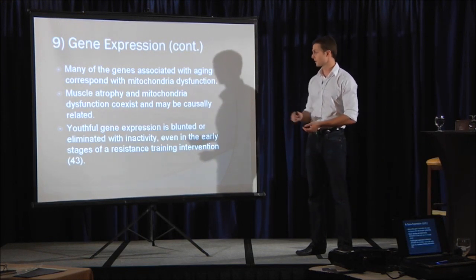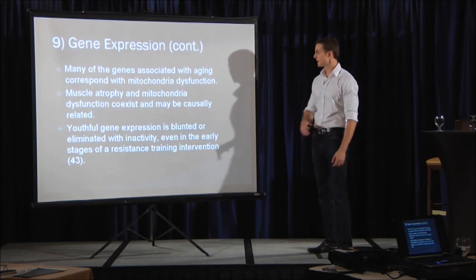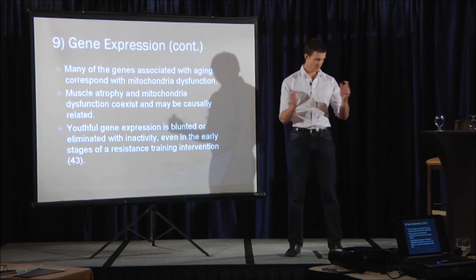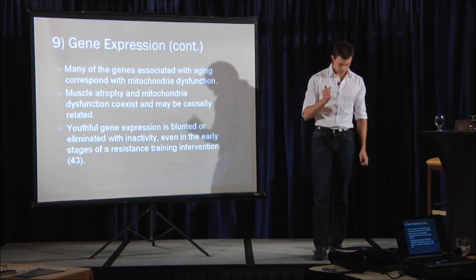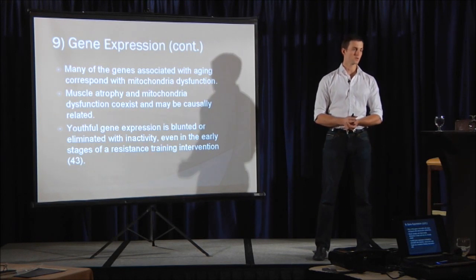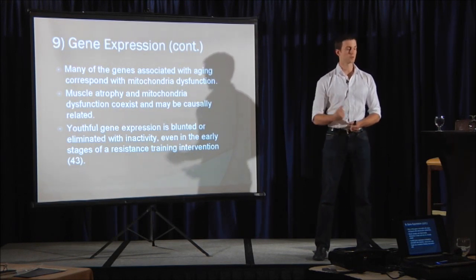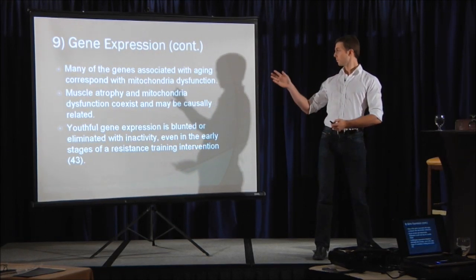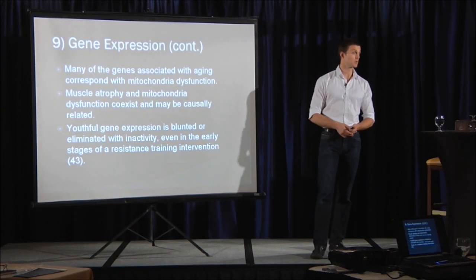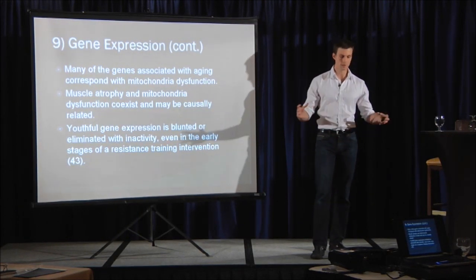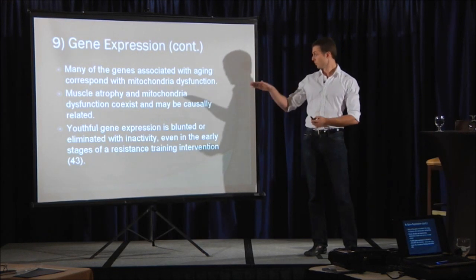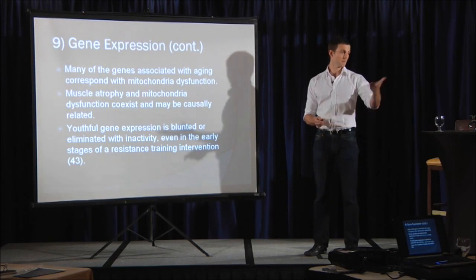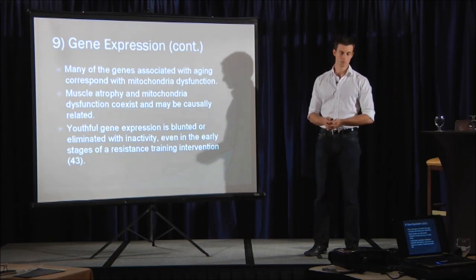Gene expression is blunted or eliminated with inactivity, the youthful gene expression. Even in the early stages of a resistance training intervention, when you walk in, if you've never trained before, whether you're 20 or you're 70, you cannot access your biggest, strongest motor units. Your central nervous system does not know how to make these muscles contract to its maximum voluntarily. And that actually might be what makes Olympians better than the laypersons, is that they can do that better than anyone else. They can use the breadth of their muscle tissue from day one. But if you use this as an intervention late in life, initially, you can't get to those fast-twitch fibers. And even then, as I explained earlier, some of them have turned irreversibly to connective tissue.